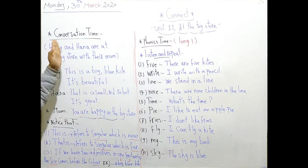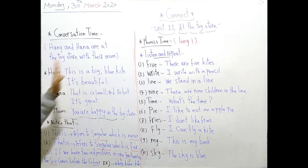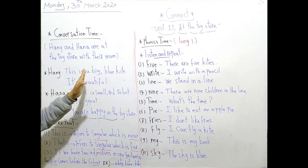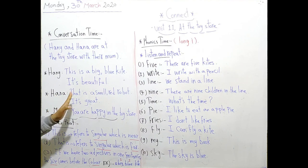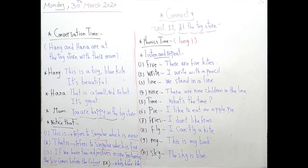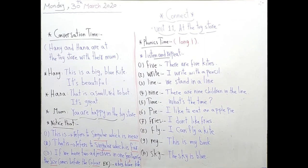Now it's time for conversation. Honey and Hannah are at the toy store with their mom. Honey says, this is a big blue kite. It's beautiful. Hannah says, that is a small red robot. It's great. Notice that instead of seeing very nice, we can say it's beautiful or it's great. Mom says, you are happy in the toy store.